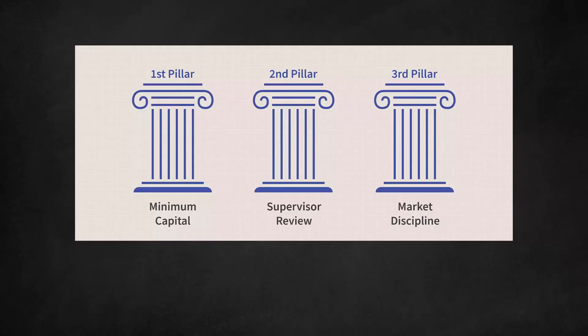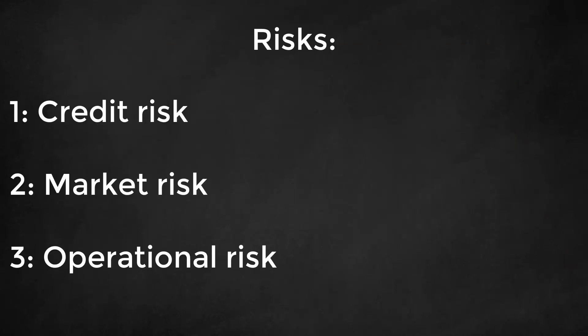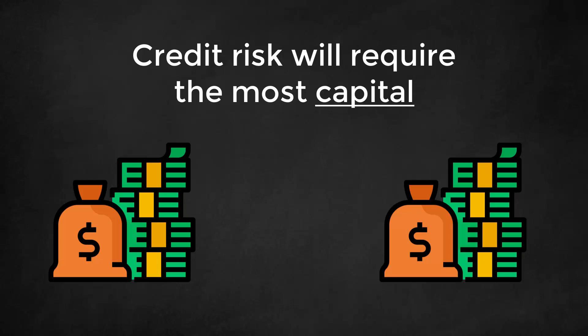The first pillar, the minimum capital requirements, is the most important. The Basel Accord requires banks to maintain capital buffers for three types of risk: credit risk, market risk, and operational risk. For nearly all banks, credit risk will require the most capital.